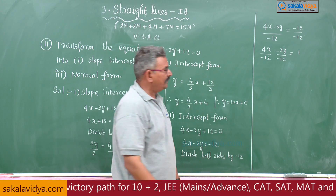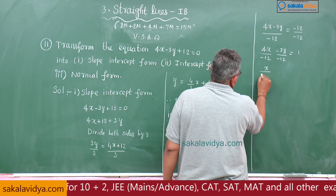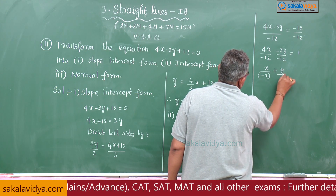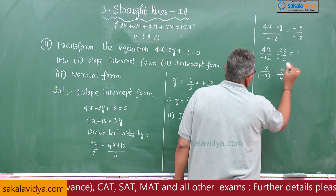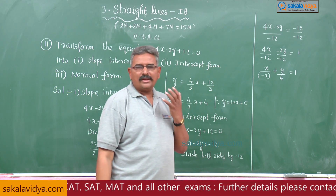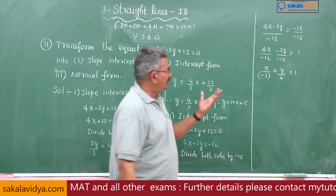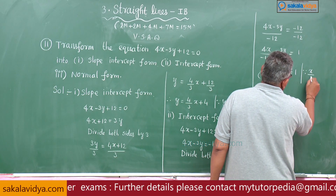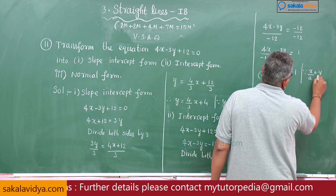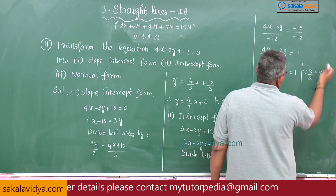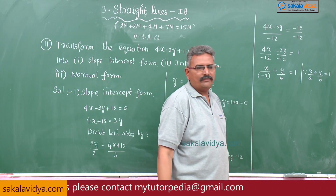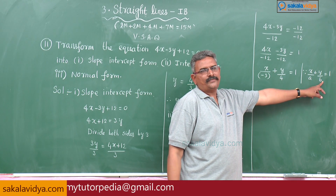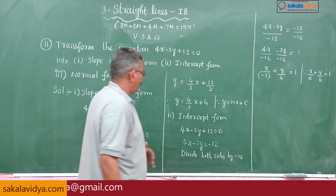This gives 4x by minus 12 minus 3y by minus 12 equals 1, which simplifies to x by minus 3 plus y by 4 equals 1. This is in the form x by a plus y by b equals 1 — the intercept form — where a is the x-intercept and b is the y-intercept.